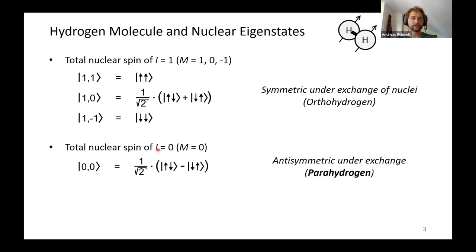The big difference between the parahydrogen state and the triplet state is that parahydrogen is antisymmetric under exchange of the two protons — meaning when you exchange the two arrows, you get the same wave function but with a minus sign in front. The three triplet states, by contrast, remain the same under exchange, so they are symmetric states.